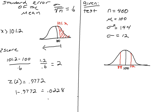So we can say roughly, if we convert this into a percentage, 2.28% of our students are going to score better than 101.2.